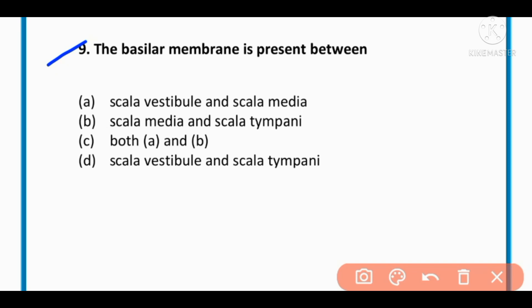MCQ number 9: The basilar membrane is present between scala vestibuli and scala media, scala media and scala tympani, both A and B, or scala vestibuli and scala tympani. The correct option is B: scala media and scala tympani.